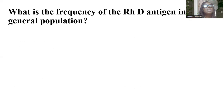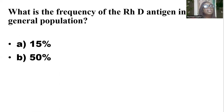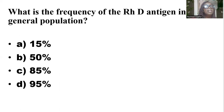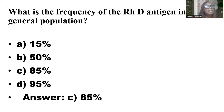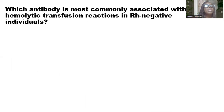What is the frequency of the RHD antigen in the general population? The options are 15%, 50%, 85%, and 95%. And the answer is C — 85%.